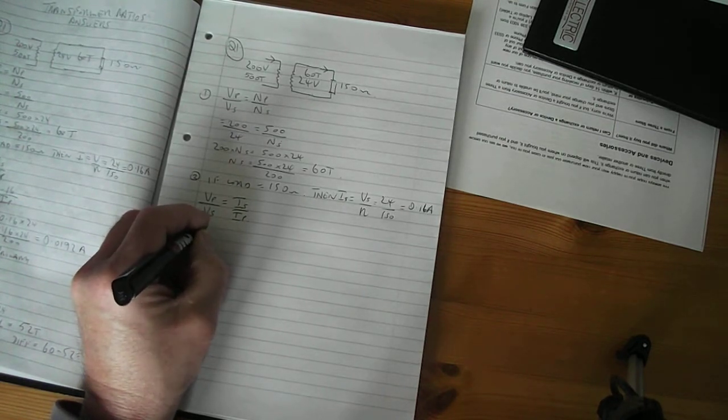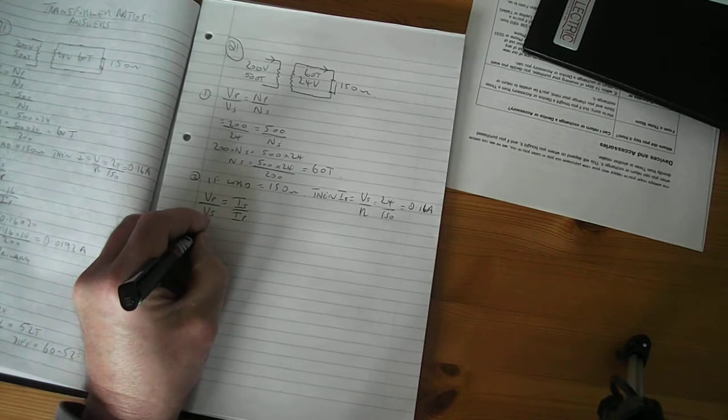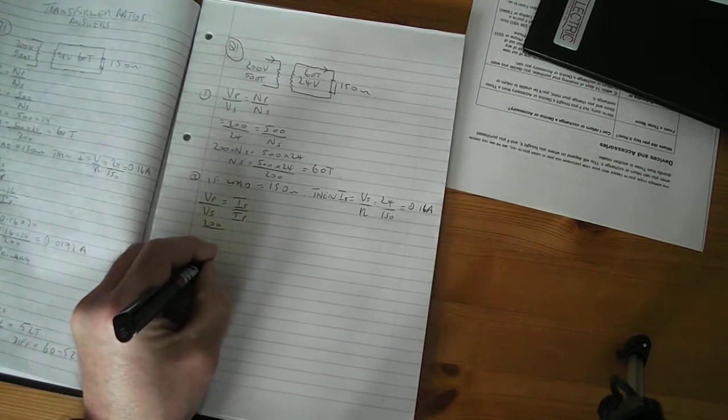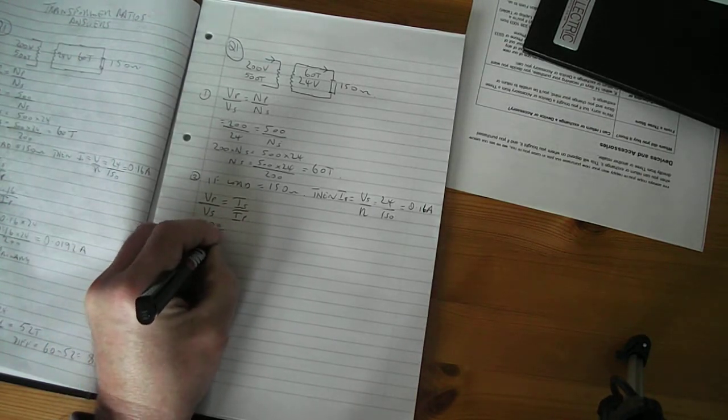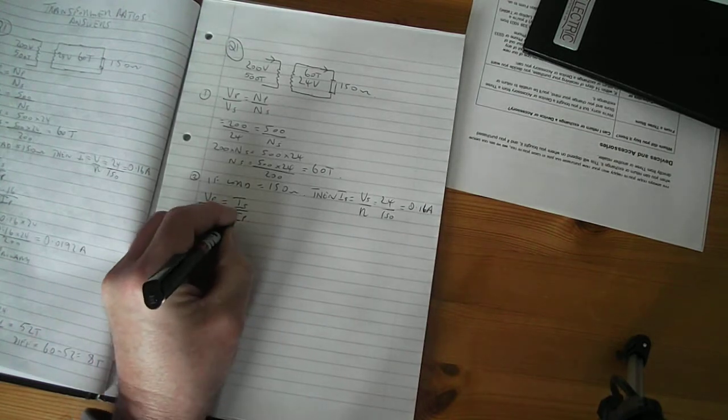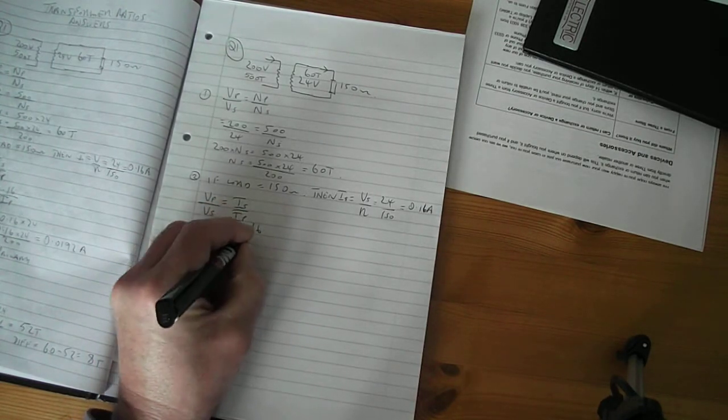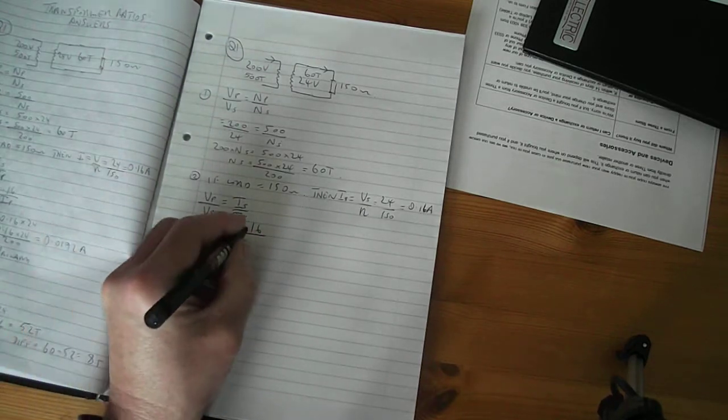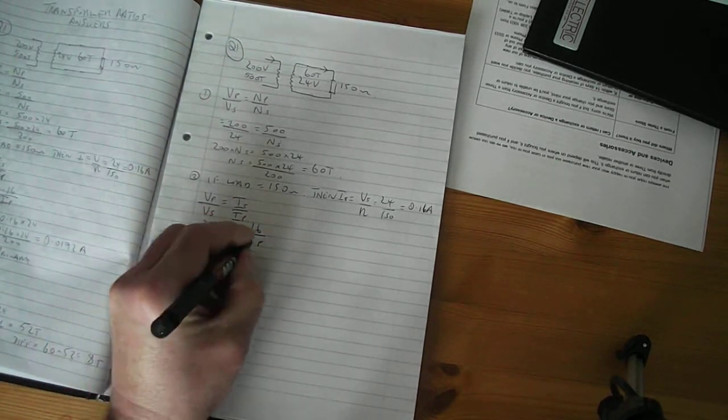V primary over V secondary, V primary is 200 volts, secondary is 24 volts, equals 0.16, which is our secondary current, and we're trying to find our primary current on the bottom.